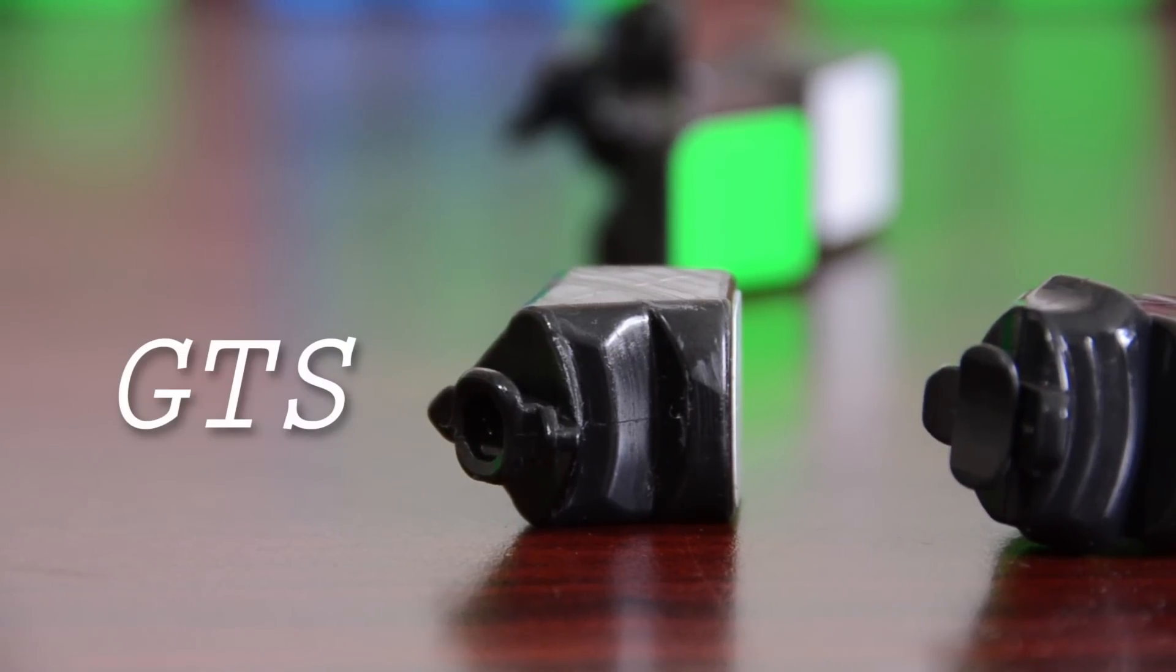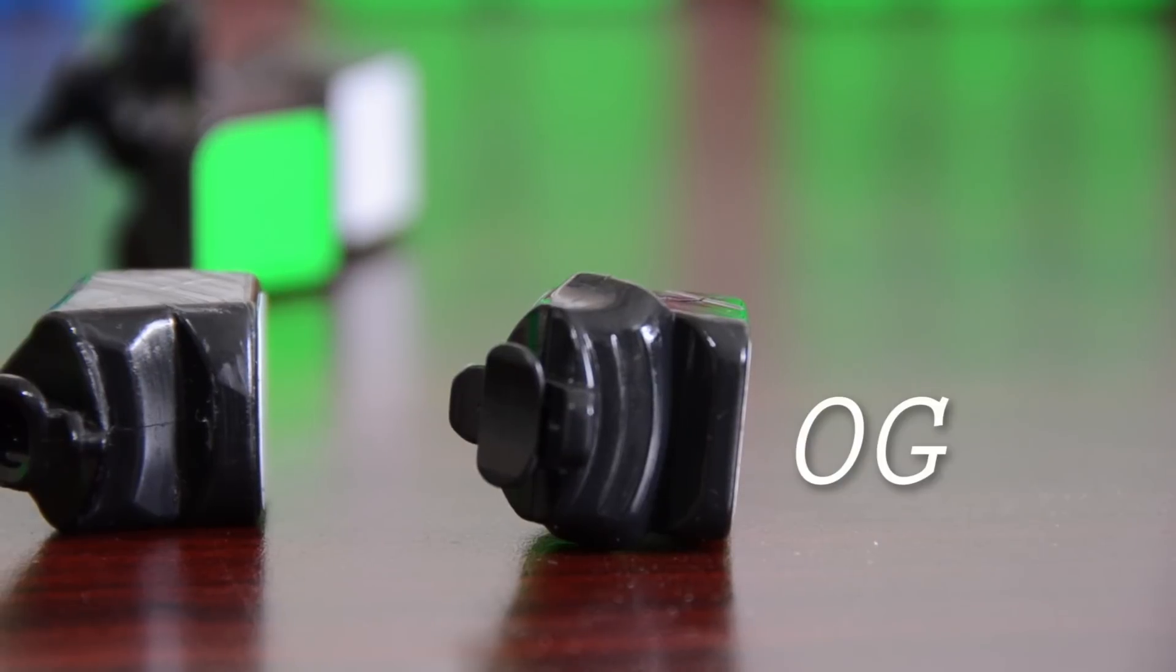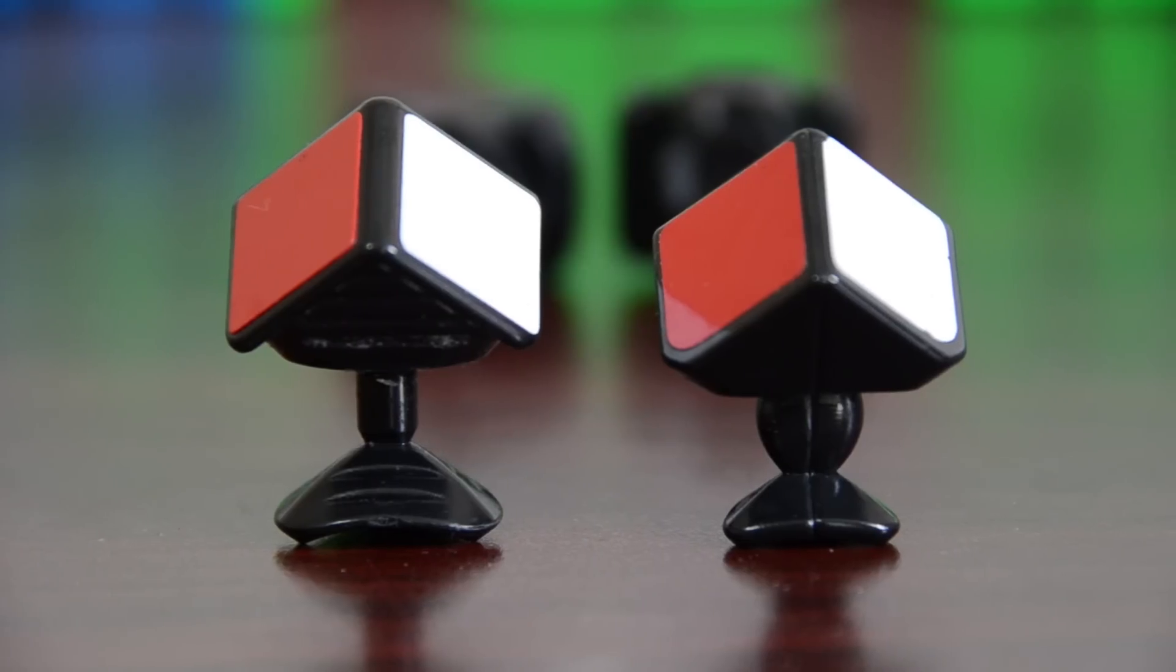Though the feel seems to be very far off the original Weilong, some distinct similarities do exist in the pieces. The shape of the edges are very close, and the top of the corner looks fairly similar. However, the GTS does have the expected squared-off corner design.